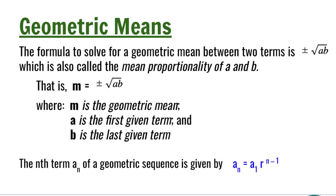Here, m is the geometric mean, a is the first term, and b is the last term. In our previous lesson, we also learned that the nth term of a geometric sequence is given by the formula a sub n is equal to a sub 1 times r to the power of n minus 1.